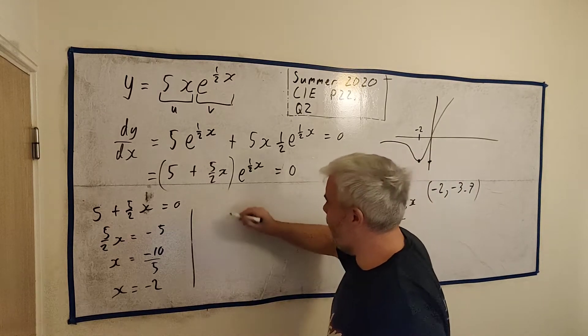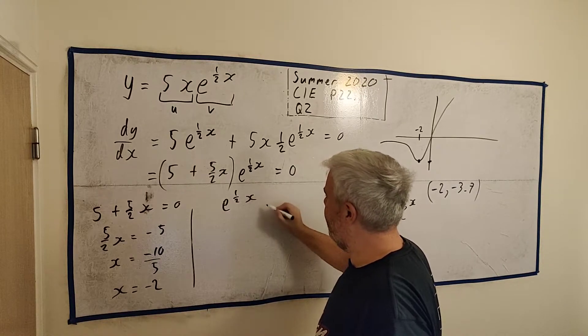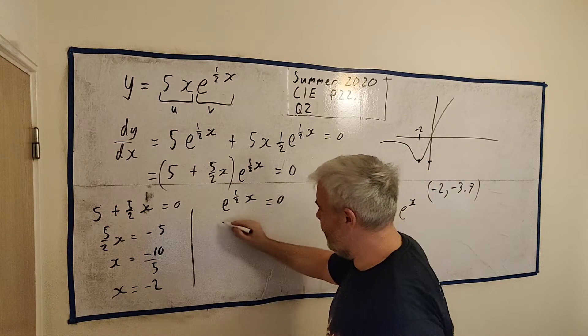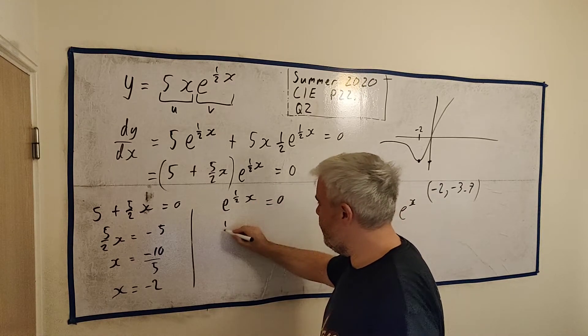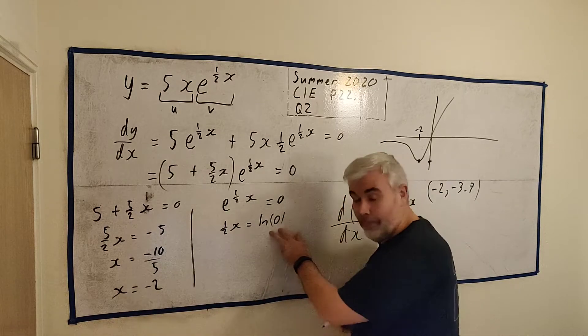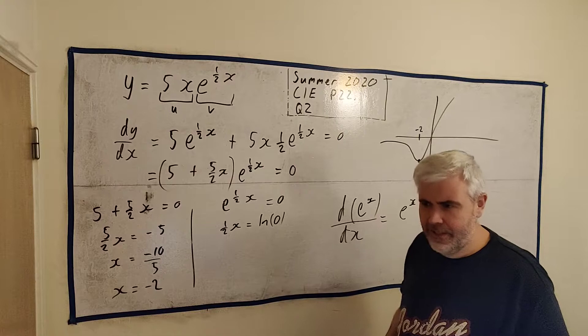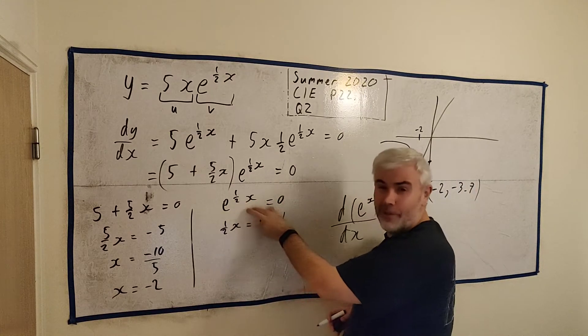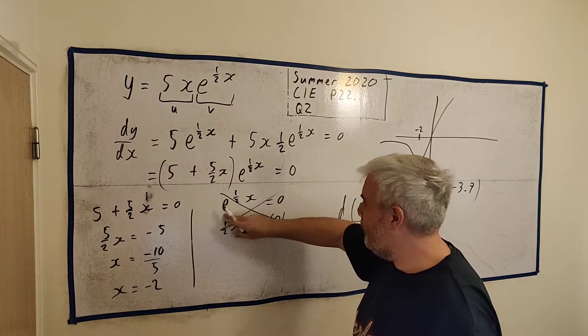And let's do the other one. You might already see a problem with this one. E to the power of a half x equals zero. So we could use the natural log to try into this. Natural log of both sides. Natural log of e disappears. So we just get a half x is equal natural log of zero. There's your problem. The calculator will tell you that's an error. And more accurately, I guess, it approaches minus infinity.